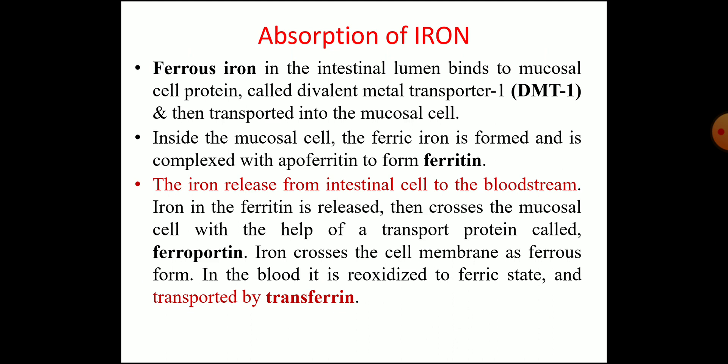In the intestinal lumen, iron may be present in ferric form in food, but it is reduced to the ferrous form with the help of vitamin C or gastric acid in the stomach. Once the ferrous form is present, it binds to the mucosal cell protein called the divalent metal transporter 1 (DMT1) and is transported into the mucosal cell. Inside the mucosal cell, iron is converted back to ferric form and complexed with apoferritin to form ferritin, which is the storage form within the cell.